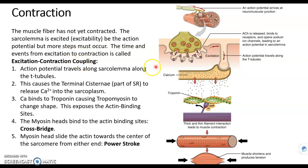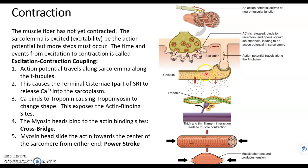So what are the steps of EC coupling? Well, it starts with excitation. The action potential travels along the sarcolemma and goes down all the T-tubules. This causes the calcium stored in the sarcoplasmic reticulum — specifically the terminal cisternae — to get released. So calcium is now free inside the cell.